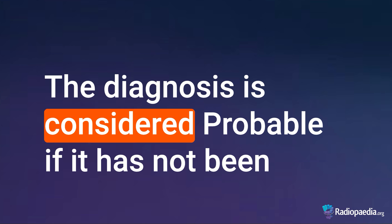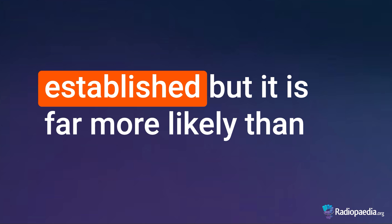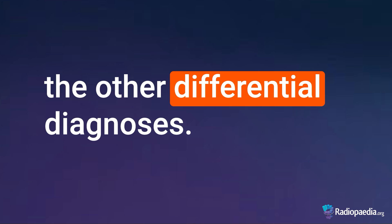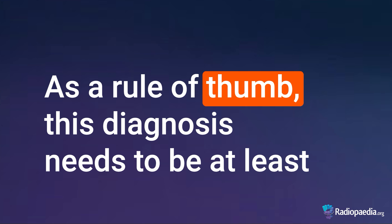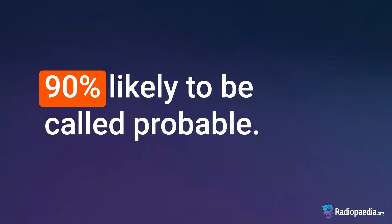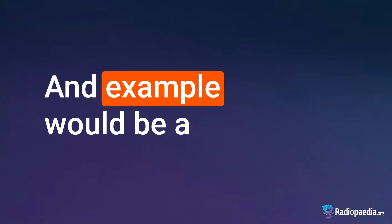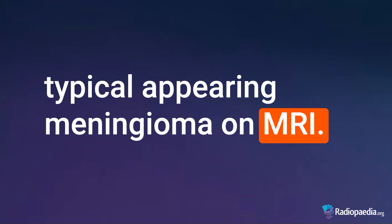The diagnosis is considered probable if it has not been established, but it is far more likely than the other differential diagnoses. As a rule of thumb, this diagnosis needs to be at least 90% likely to be called probable. An example would be a typical appearing meningioma on MRI.